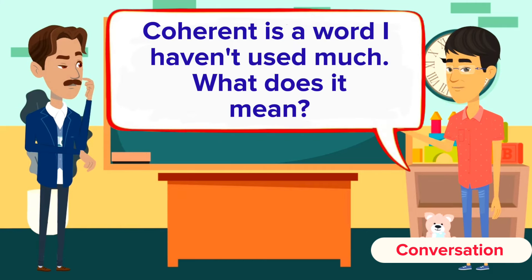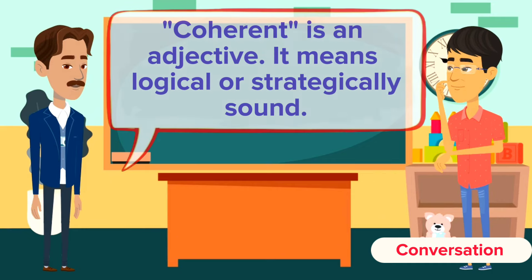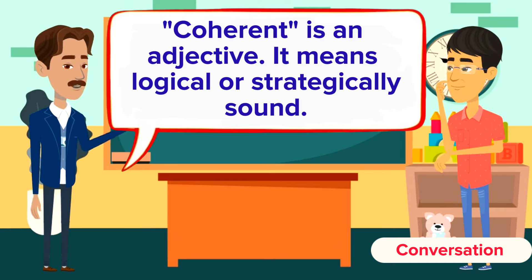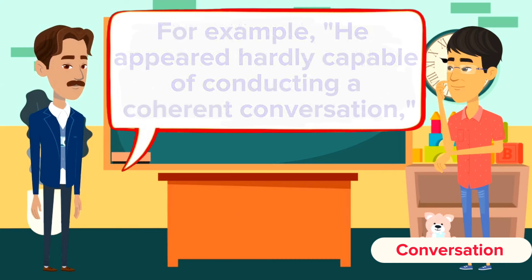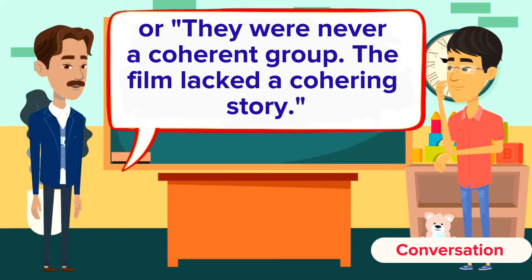'Coherent' is a word I haven't used much — what does it mean? Coherent is an adjective. It means logical or strategically sound. For example: he appeared hardly capable of conducting a coherent conversation, or they were never a coherent group, or the film lacked a cohering story.